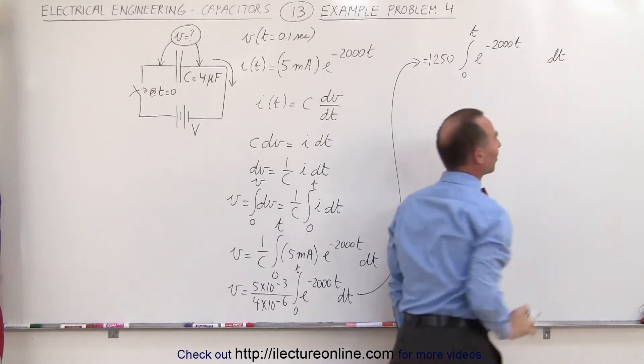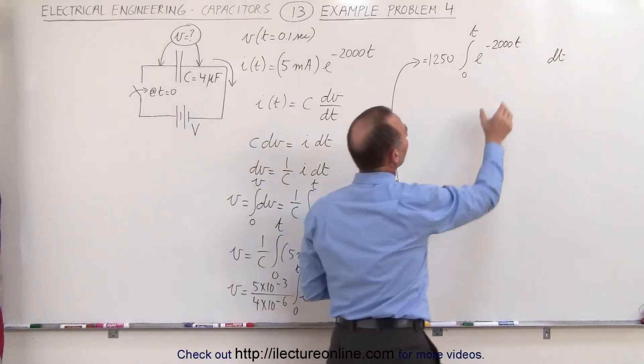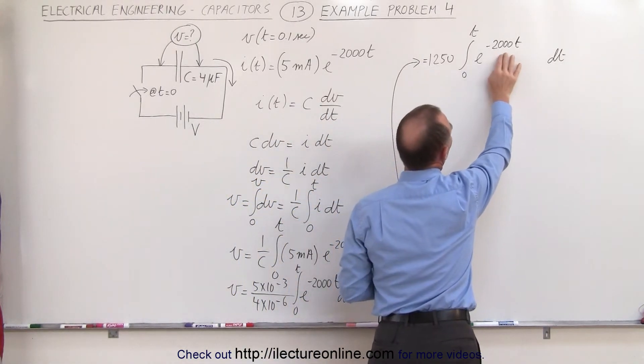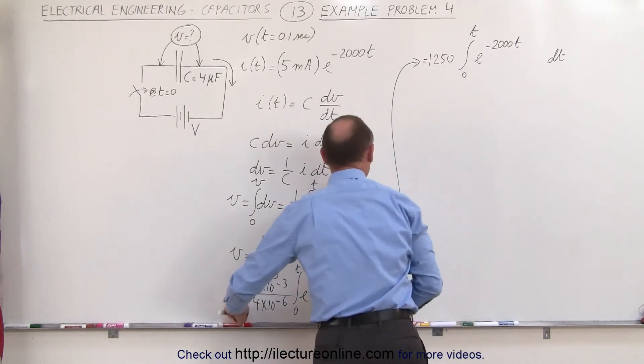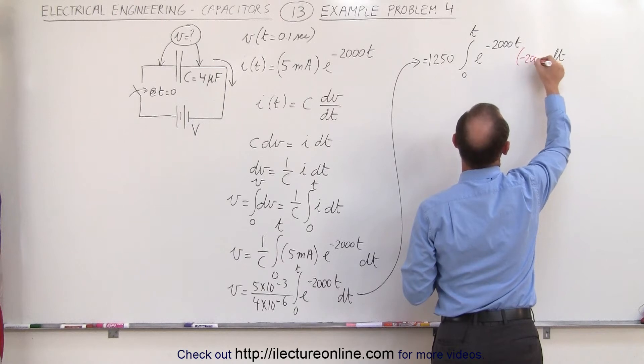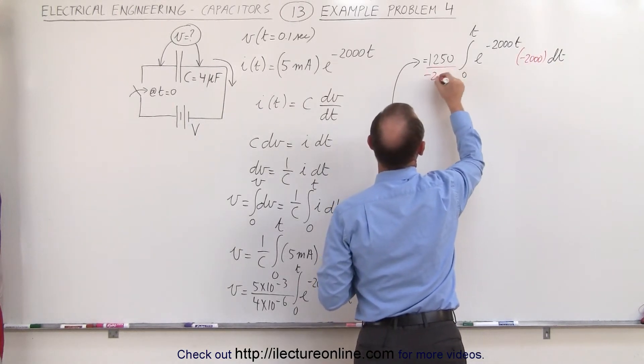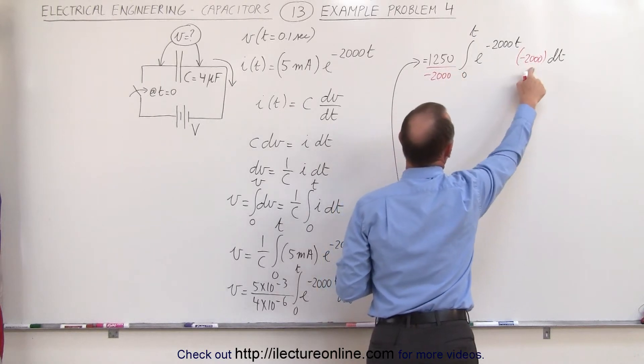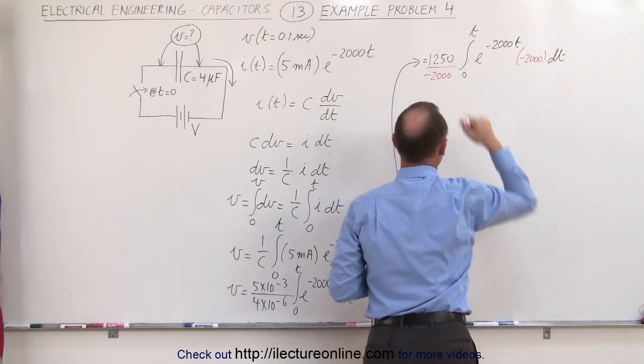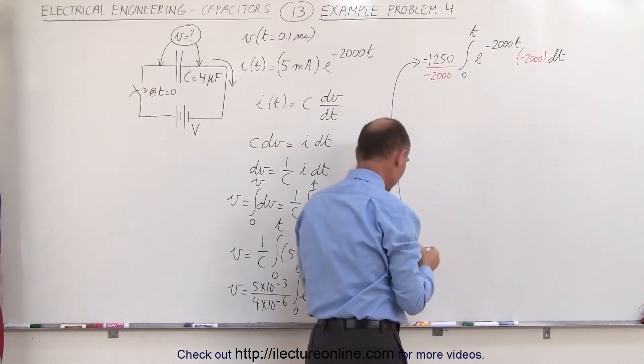Notice I left some space here because I need to find the proper differential. The differential of the exponent is minus 2000 and since we don't have a minus 2000, I'm going to add a minus 2000 here, and I'll have to then of course divide by minus 2000 here to keep everything the same. So I multiply times a minus 2000 and I divide by minus 2000. So now I have the proper differential to do that integral.